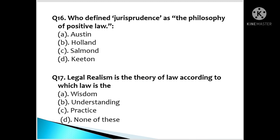Question number 16: Who defined jurisprudence as the philosophy of positive law? A. Austin, B. Holland, C. Salmond, D. Keeton. Question number 17: Legal realism is a theory of law according to which law is the? A. Wisdom, B. Understanding, C. Practice, D. None of these.